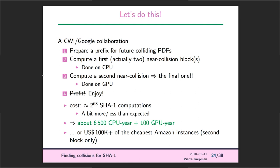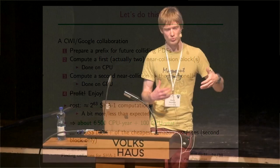A bit less because we were lucky — found it earlier than estimated — but the estimates were worse than expected. In terms of computation, that was 6,500 CPU-years plus 100 GPU-years. The 6,500 CPU-years is actually less computation than the 100 GPU-years — it takes more time but is less efficient. If you have 100,000 US dollars, you can also do the second block on Amazon.